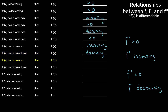If we have a function that's concave up, then its second derivative needs to be positive. And if a function is concave down, then its second derivative needs to be negative. These two should have been nice and easy to follow along with.